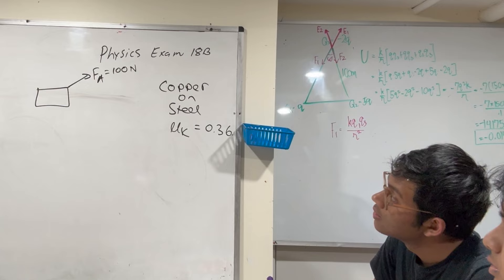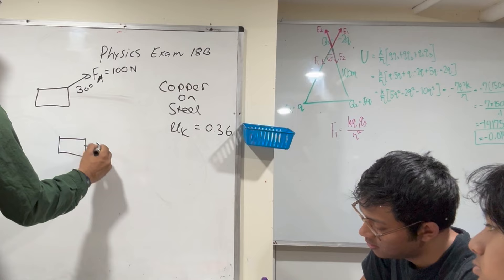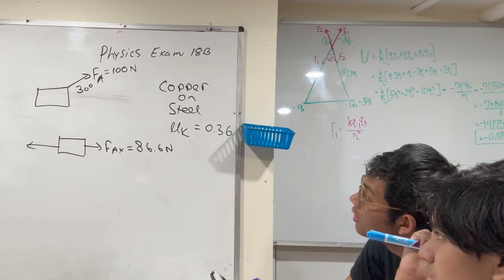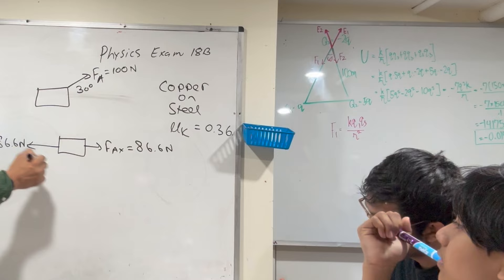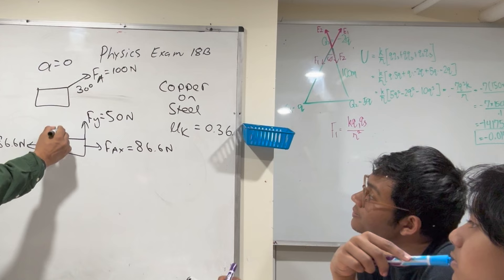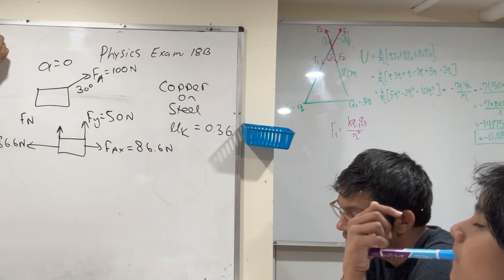FA is 100 Newtons. Would you be able to tell me what F_Ax is? It would be 86.6 Newtons. Would you be able to tell me F_friction? Why? Because acceleration is zero. Would you be able to tell me F_N? The normal force is 86.6 divided by 0.36, which is 240.5.